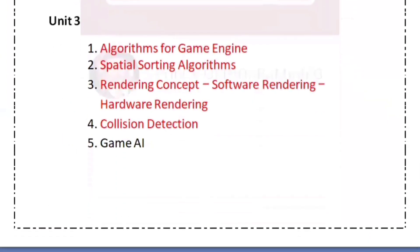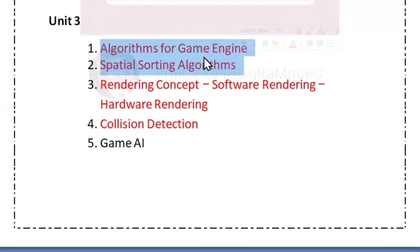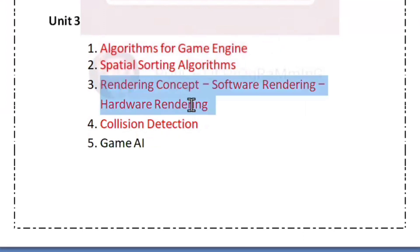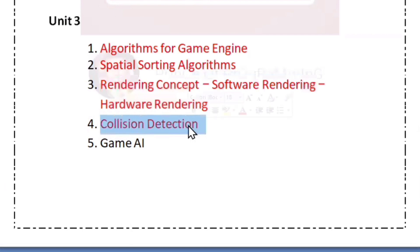The third unit is Algorithms for Game Engines, which includes Spatial Sorting Algorithms. There are two types of algorithms. For example, there is the concept of rendering — software and hardware rendering. The fourth question in this unit is Collision Detection.